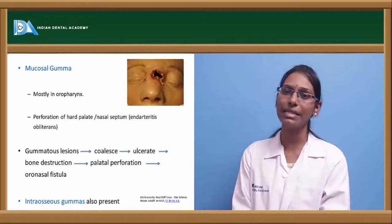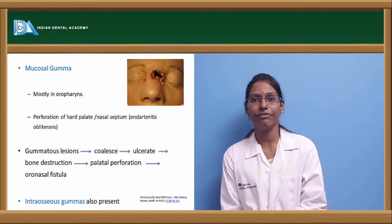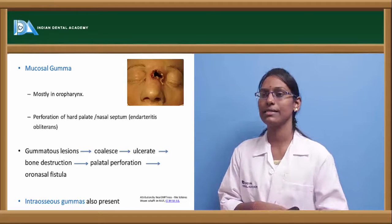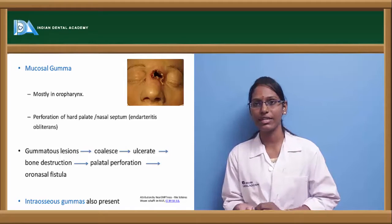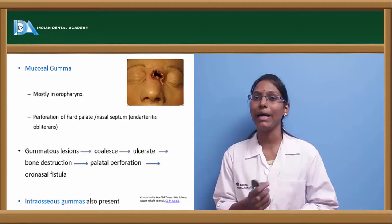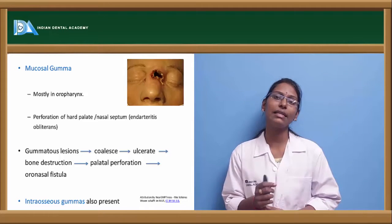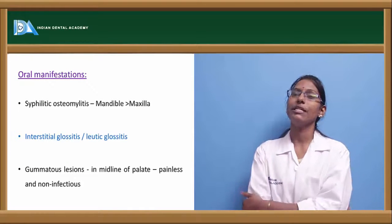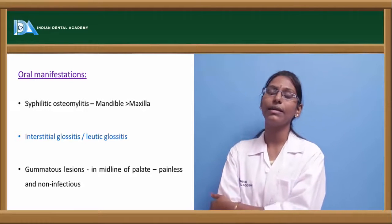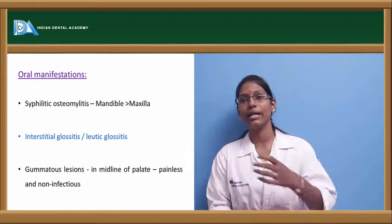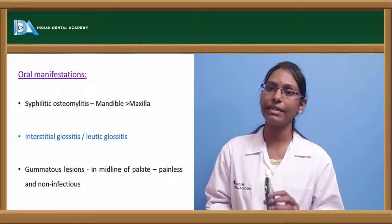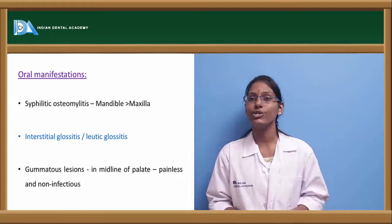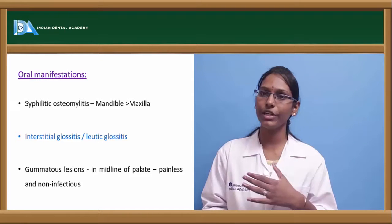Mucosal gumma is most commonly seen in the oropharynx region. Due to endarteritis obliterans, gummatous lesions can lead to perforation of the hard palate or nasal septum. Gummatous lesions coalesce and ulcerate, leading to bone destruction. In the palatal region this can create an oronasal fistula, and in the nasal septum it causes septal perforation. Intraosseous gummas are also seen. Other oral manifestations include syphilitic osteomyelitis, most commonly of the mandible, and interstitial glossitis or luetic glossitis affecting the tongue — a potentially malignant lesion. Gummatous lesions are usually seen in the midline of the palate and are painless and non-infectious.